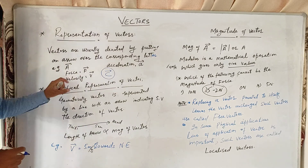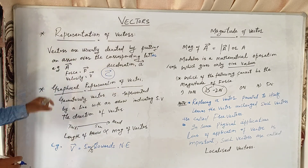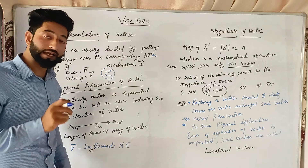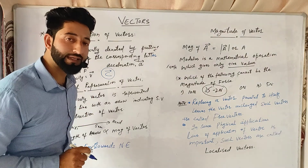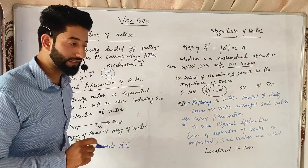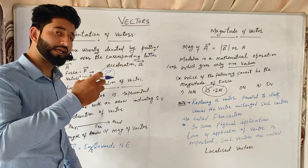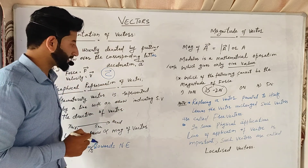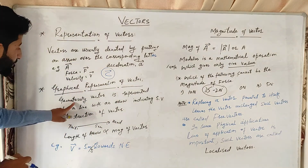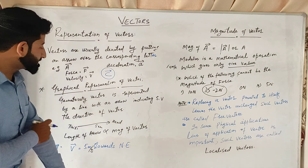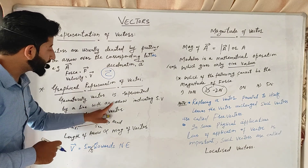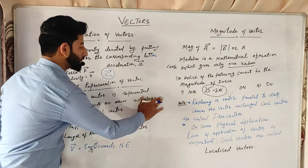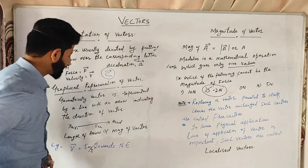This is a simple thing about the representation of vectors. Now we will see graphically how we represent vectors. Geometrically, vectors are represented by a line with an arrow indicating the direction of the vector.